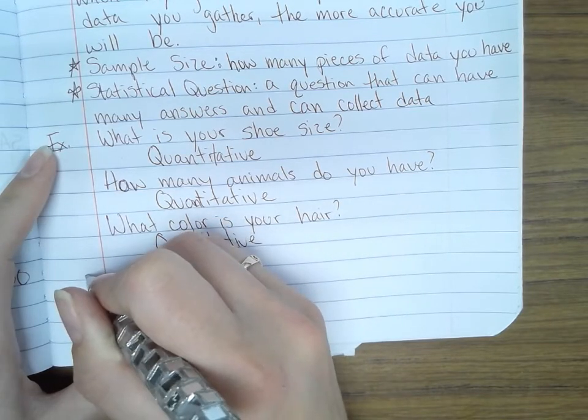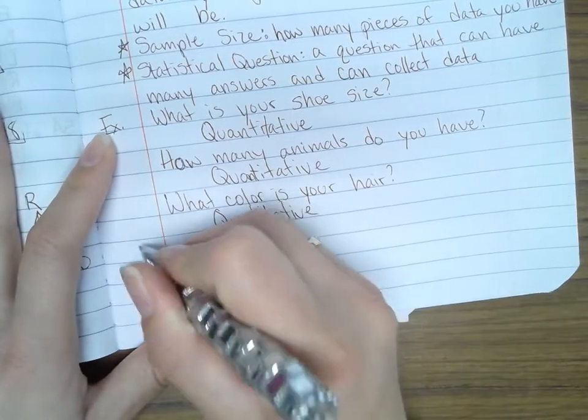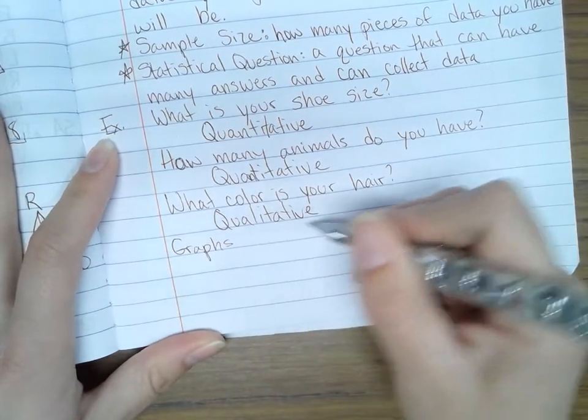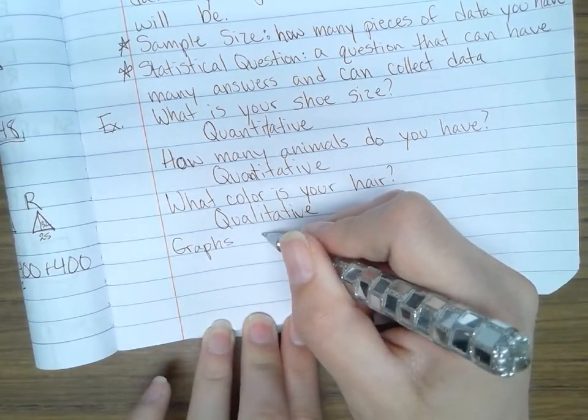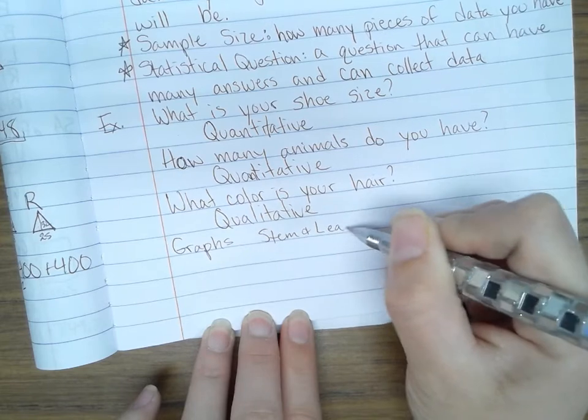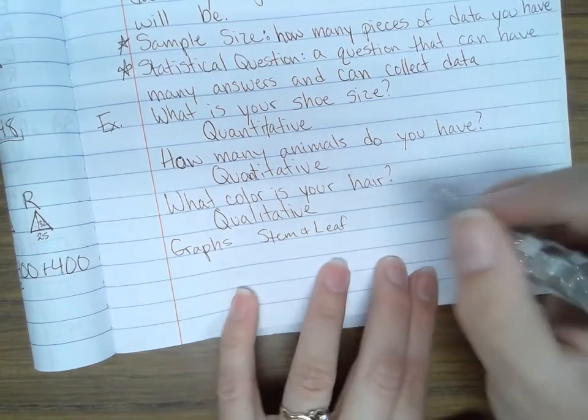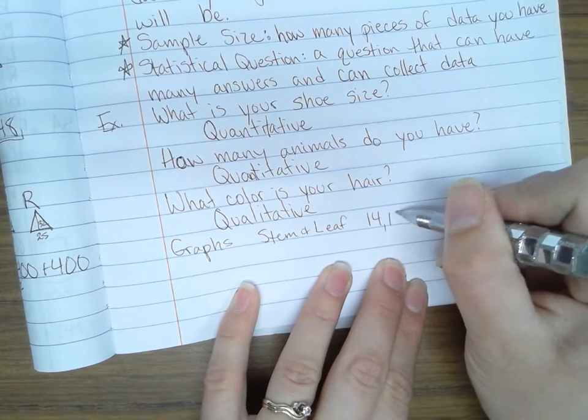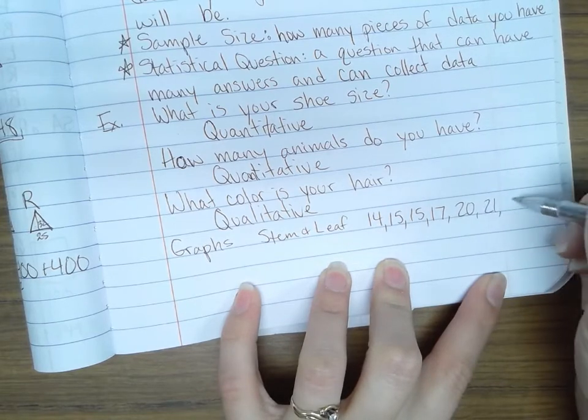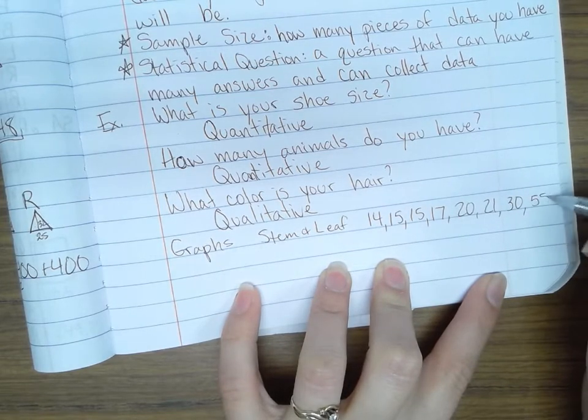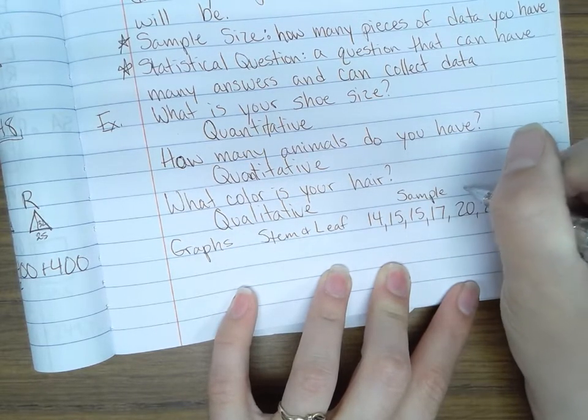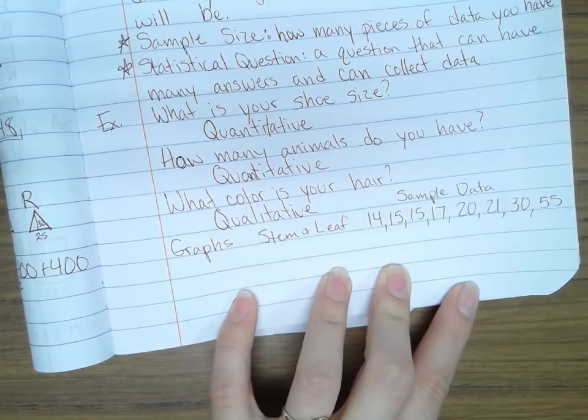I just want to show a couple of different graphs that you can have. These are different graphs that you might use. We could use stem and leaf. If I have the numbers 14, 15, 15, 17, 20, 21, 30, 55, so this is my sample size or sample data here. A stem and leaf plot.